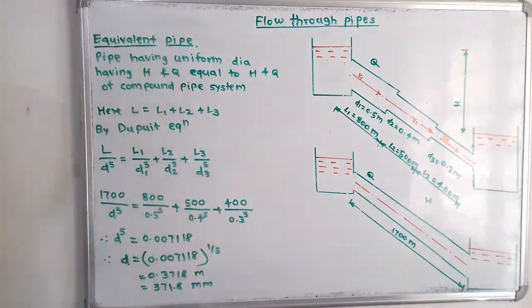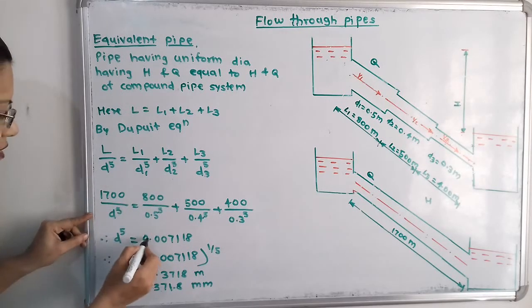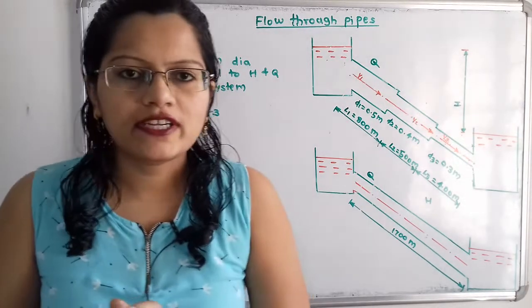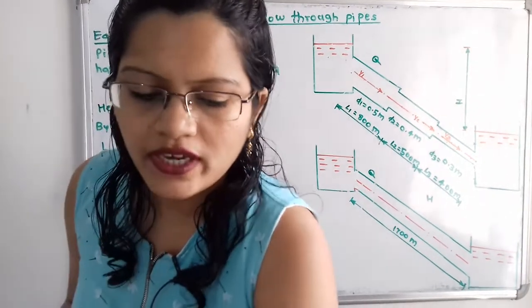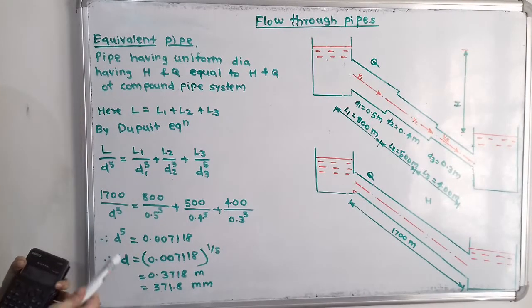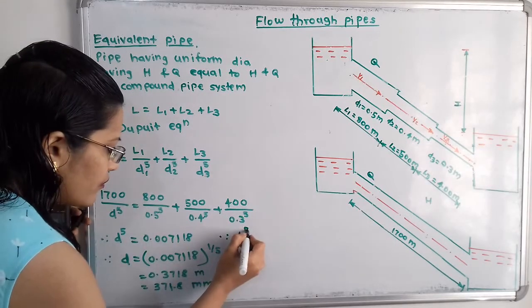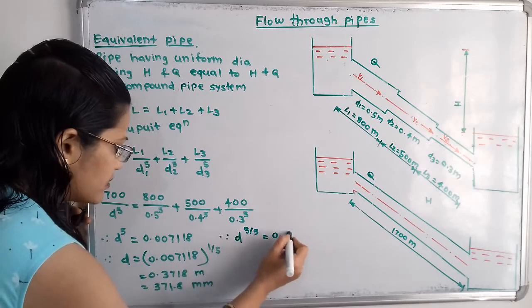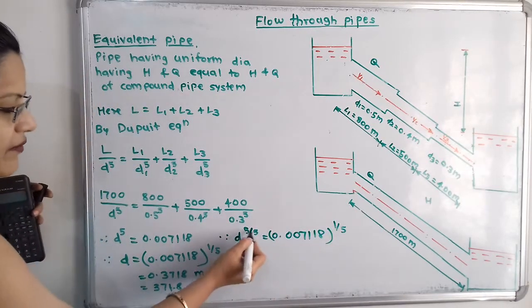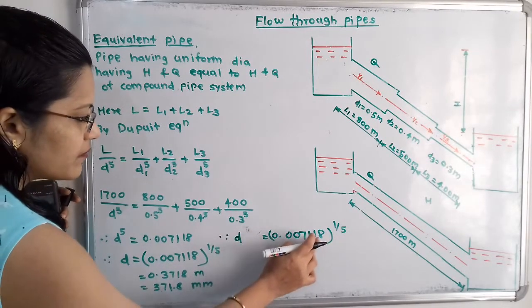When we put in all the values and simplify, we get D^5 = 0.007118. Now the important point is how to calculate D from this. Since D^5 = 0.007118, we can write D = 0.007118^(1/5).